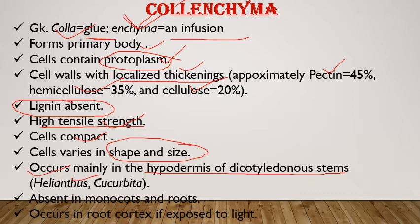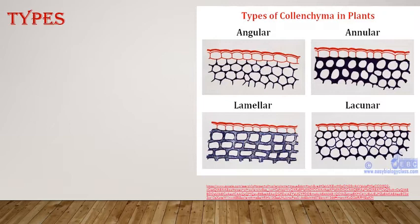Important point: colenchyma is absent in monocots and in roots of both monocot and dicot. In dicot stems it is present; in roots of both monocot and dicot it is absent. However, it can occur in root cortex if roots are exposed to light — this is an exceptional case where colenchyma develops in the cortex of exposed roots.